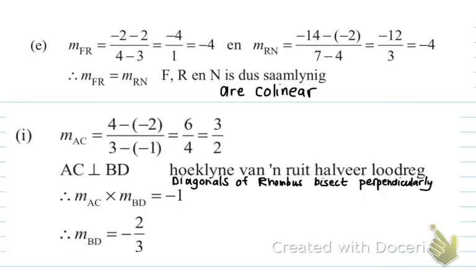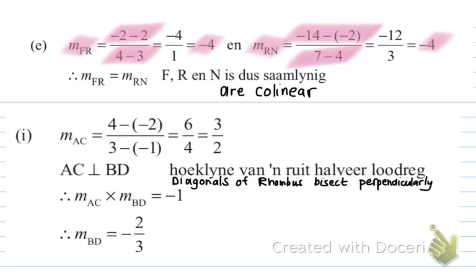Number E: show that points F, R and N are collinear. F is (3, 2), R is (4, negative 2) and N is (7, negative 14). I find the gradient of FR and the gradient of RN. The gradient of FR is the y-value subtracted over the x-value subtracted, giving negative 4. The gradient of RN is also negative 4. Because these are equal — the gradient of FR equals the gradient of RN — F, R and N are collinear.